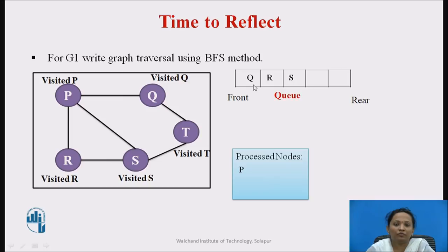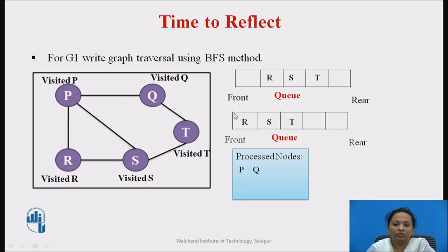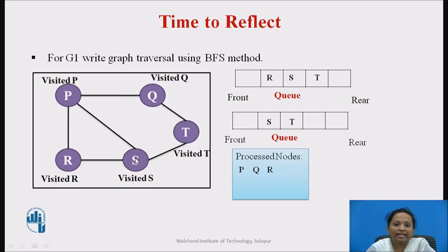The status of Q, R, and S is now set to waiting. We dequeue the first node Q, mark it as processed. The neighboring nodes of Q are P and T; P is already processed, so T is enqueued into the queue. Next, we dequeue R, mark it as processed. The neighboring nodes of R are P and S; P is already processed and S is in waiting, so there are no further nodes to enqueue.